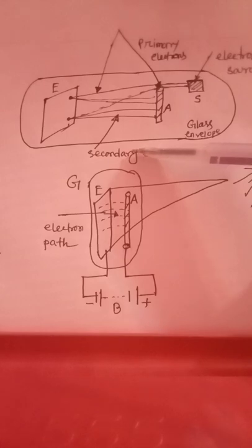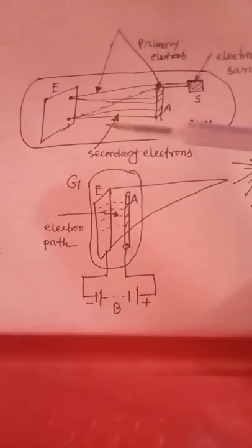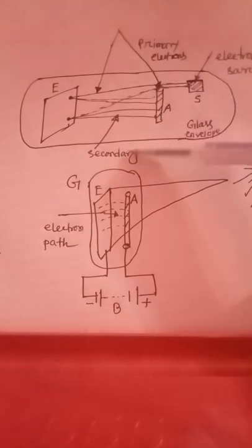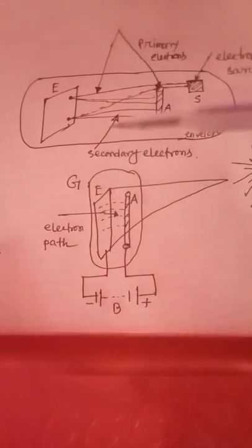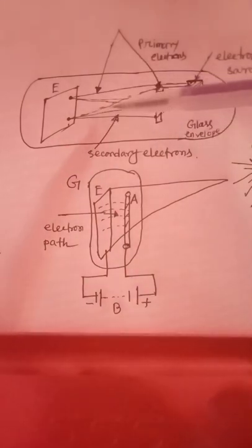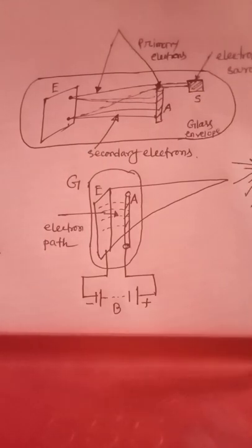The intensity of secondary emission depends upon the emitter material. Secondary emission depends on the emitter material's mass and energy, and the mass and energy of the bombarding particles.